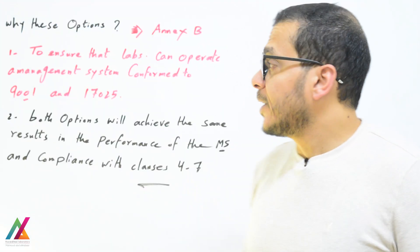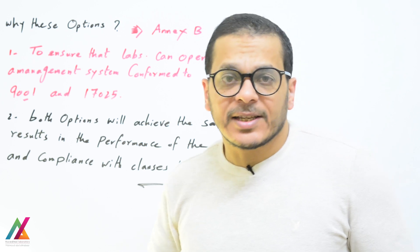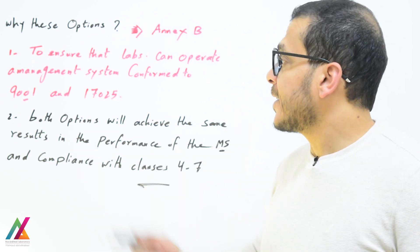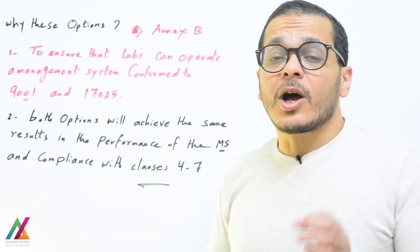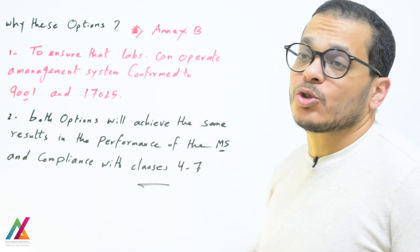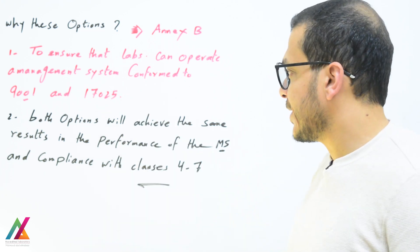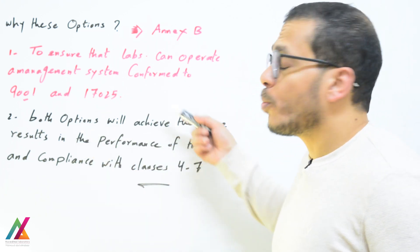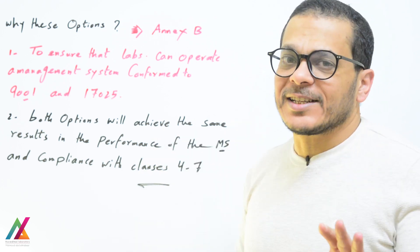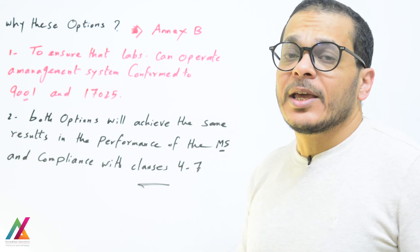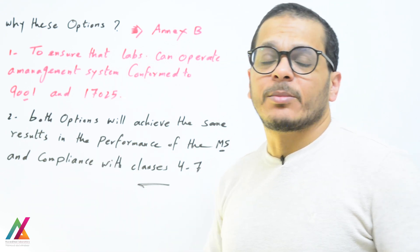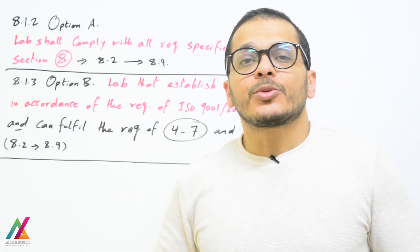The reasons for these options can be found in Annex B of this document. The first point is to ensure that lab operators can operate a management system that conforms to both ISO 9001 and ISO 17025:2017. Both Option A and Option B will achieve the same results and performance of the management system, ensuring compliance with clauses 4 to 7.